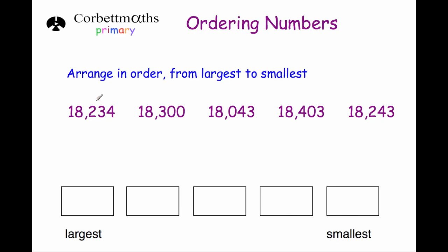We look at the hundreds column: the values are 2, 3, 0, 4, and 2. The largest number is 18403 because it has a 4 in the hundreds column. The next biggest is 18300 because it has the next biggest digit — 3 — in the hundreds column.